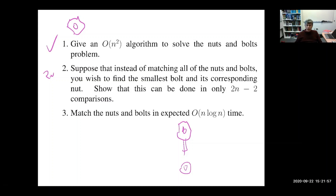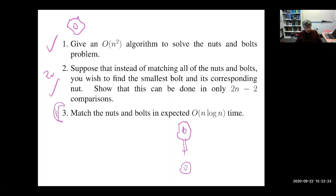The basic idea of why it's 2n − 2 should be clear. There's some level of detail in getting it right in the case of equality, but that explanation sounded good. Now the interesting question: how do I match all the nuts and bolts in n log n comparisons in expectation?